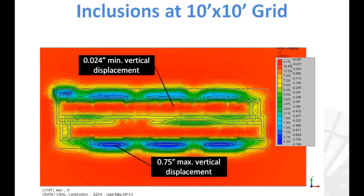By adding inclusions on a 10-foot by 10-foot grid and including the transfer mat in the model, the maximum vertical displacement is reduced from 2 inches down to about three-quarters of an inch, and the differential settlement is calculated to be about 0.73 inches. Using the rigid inclusions, there is a definite and significant decrease in both vertical displacement and differential settlement.